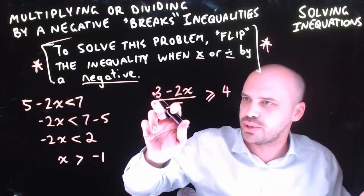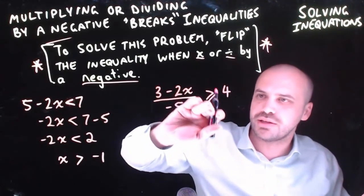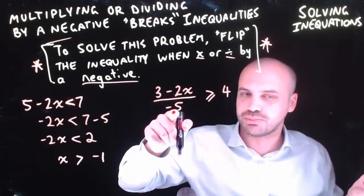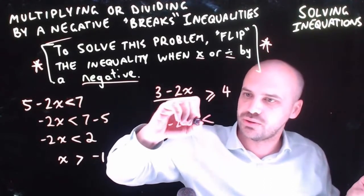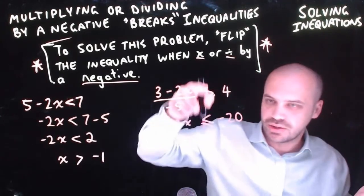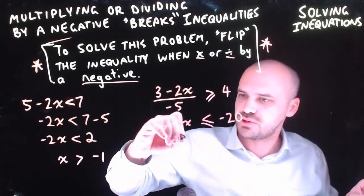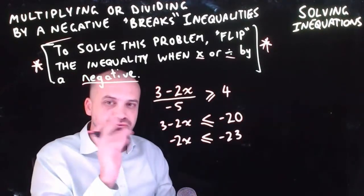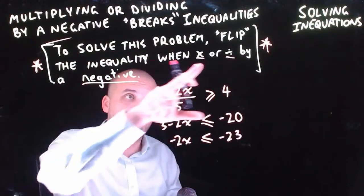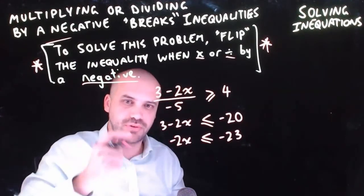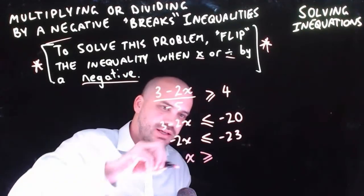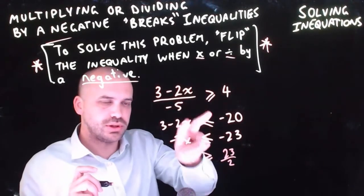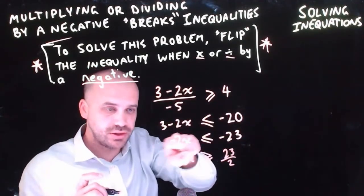One more example: 3 minus 2x divided by negative 5 is greater than or equal to 4. First, multiply both sides by negative 5 — inequality flips — giving 3 minus 2x is less than or equal to negative 20. Subtracting 3: negative 2x is less than or equal to negative 23. Finally, dividing by negative 2 flips the inequality again, giving x is greater than or equal to 23 over 2.